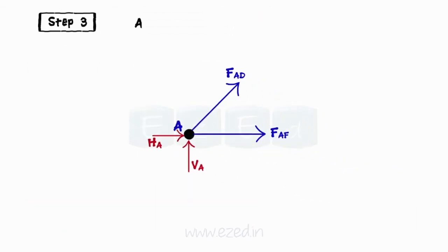Step 3: Assume that the members carry only tensile forces. Based on this assumption, show the arrows on the unknown member forces pointing away from the joint.